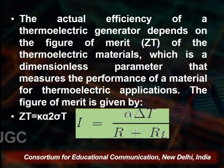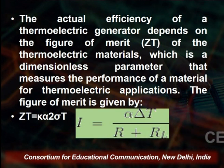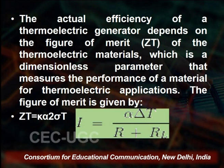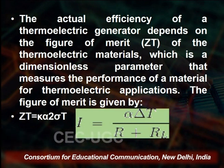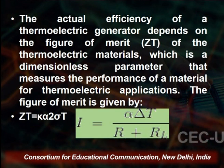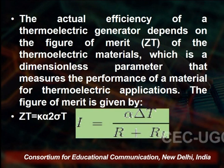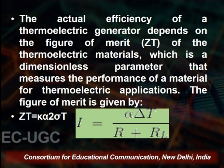The actual efficiency of a thermoelectric generator depends upon the figure of merit ZT of the thermoelectric material, which is a dimensionless parameter that measures the performance of the material for thermoelectric applications. The figure of merit is given by ZT = α²σT / K, where α is the Seebeck coefficient, σ is the electrical conductivity, K is the thermal conductivity, and T is the absolute temperature. The higher the figure of merit, the higher the efficiency of the thermoelectric generator.